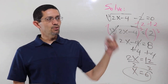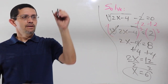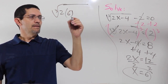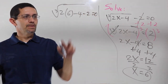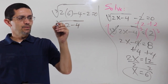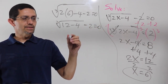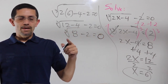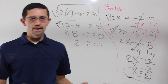Once you get an answer, make sure you go back and plug it in to double-check. So I have cubic root of 2 times x — x is 6 — minus 4, minus 2 equals 0. 2 times 6 is 12, minus 4 on the inside. Don't forget the little 3 right there. Minus 2 on the outside. 12 minus 4 is 8, so I have cubic root of 8, and cubic root of 8 is 2, minus 2 is 0. Therefore, this is the right answer.